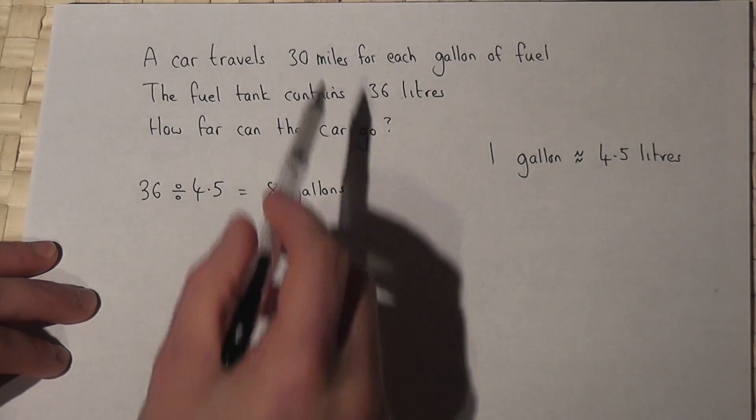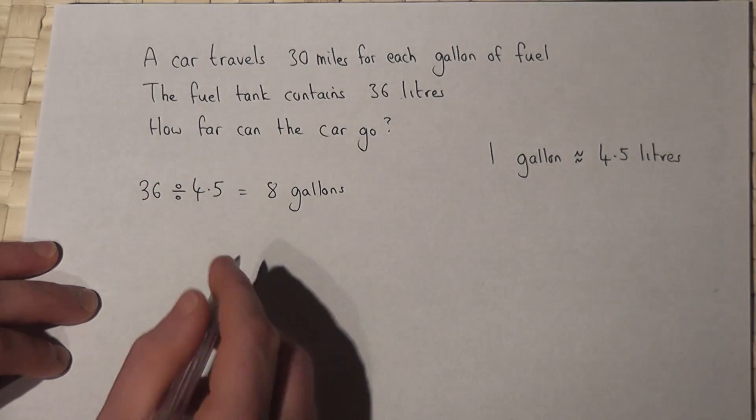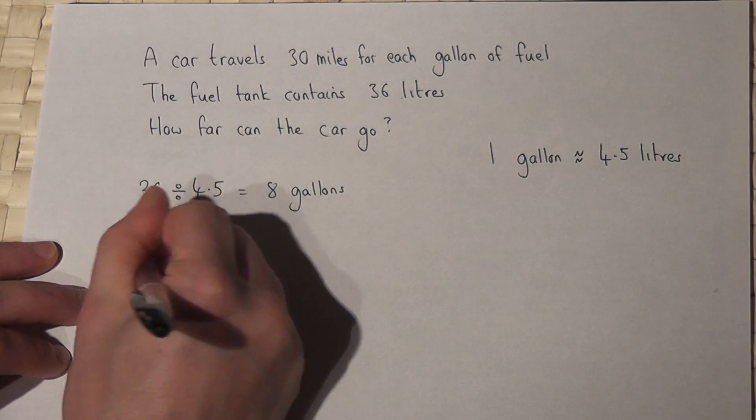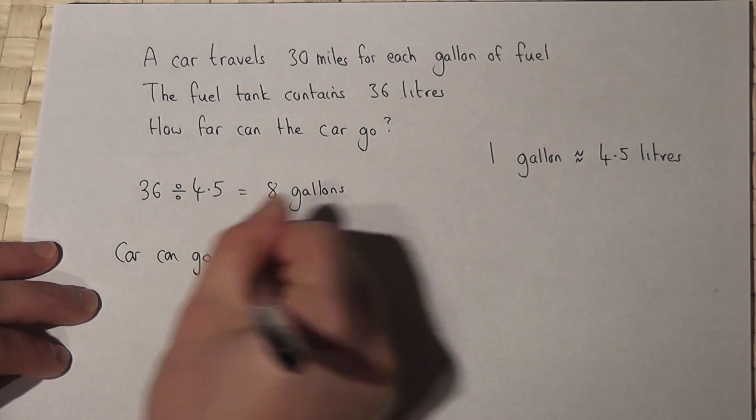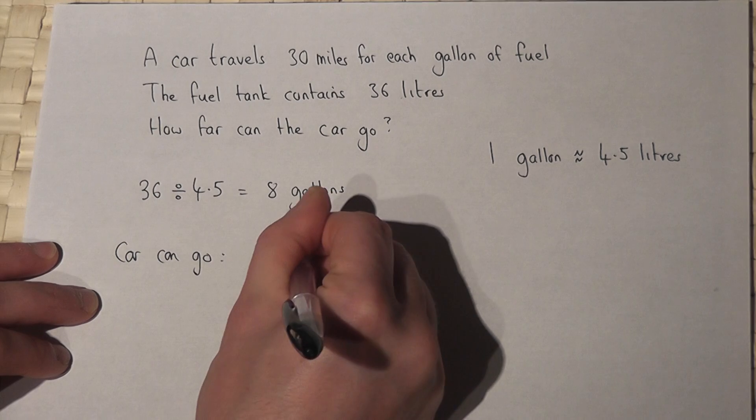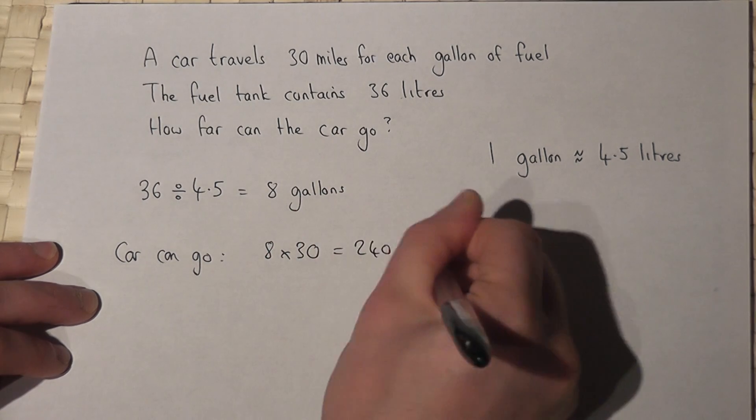Now the car will travel 30 miles for each gallon of fuel, so therefore this car can go 8 lots of 30, which is 240 miles.